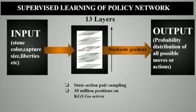In detail of Supervised Learning of Policy Network: as input we provide Stone Color, Capture Size, Liberties, etc. They go through 13 layers where State-Action Pair Sampling is done. We also train the network through 30 million positions on the KGS Go server, which go through Stochastic Gradient and give output as a probability distribution of all possible moves or actions.